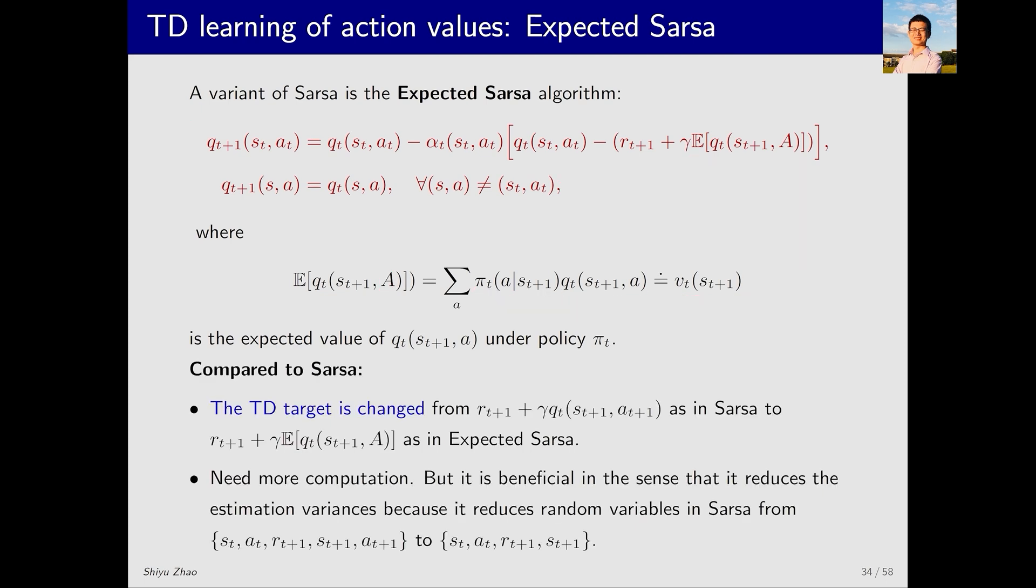Compared to SARSA, the difference lies in the TD target. The TD target is changed from this equation as in SARSA to this equation as in EXPECTED SARSA. In SARSA the TD target includes AT plus 1, while in EXPECTED SARSA it does not. EXPECTED SARSA requires more computation because we need to calculate this expectation. However, since we eliminate the need for sampling AT plus 1, the number of random variables is reduced, which in turn reduces randomness.